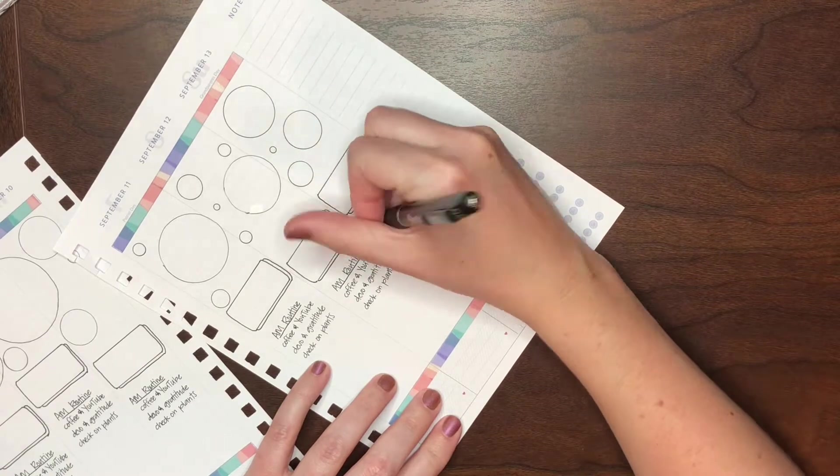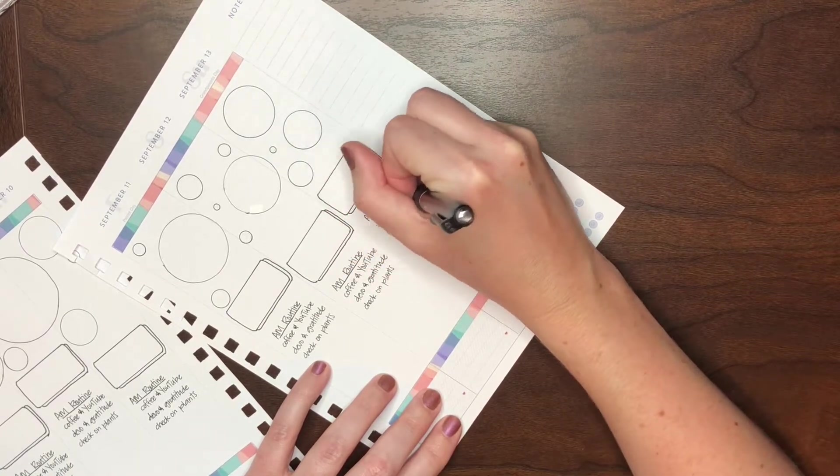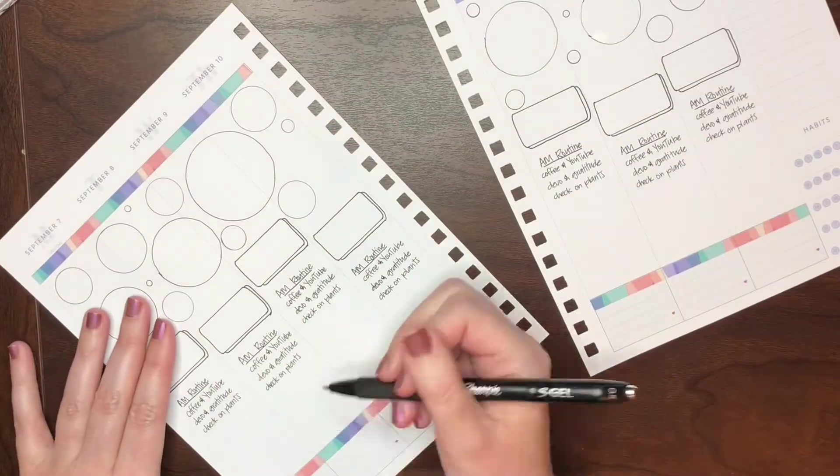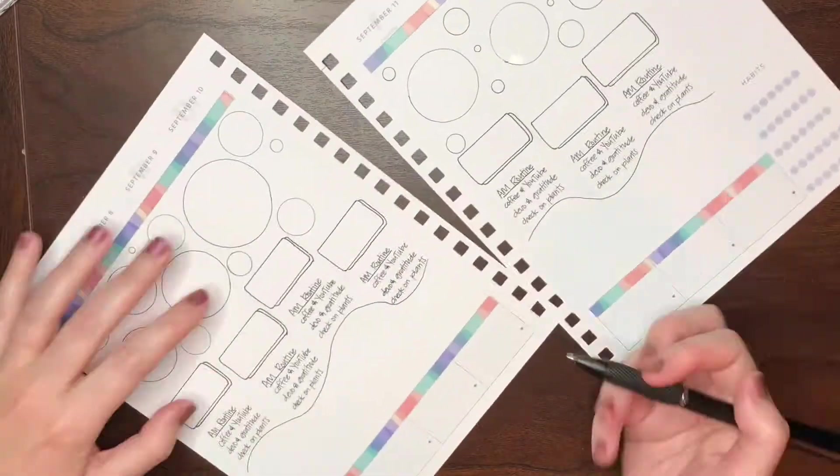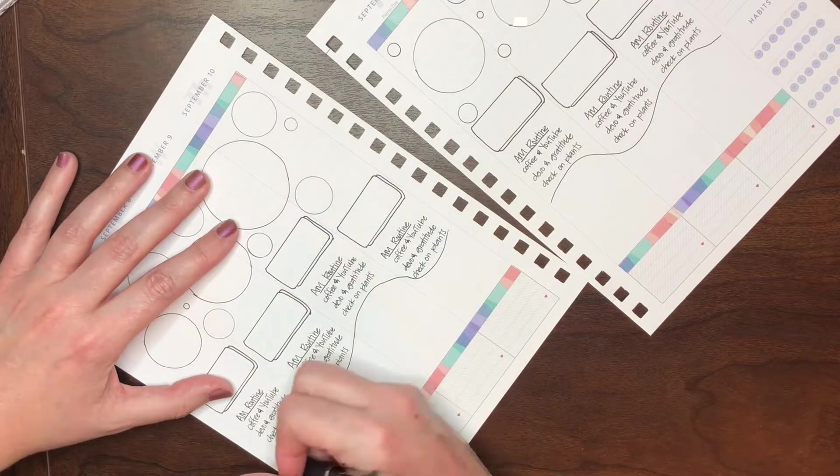Right now I'm just filling in my little AM routines. I kind of grouped a couple of things together, things that I know that I do every morning. So I'll just kind of mark those off as I do them. And then here's my little bath water to separate my AM routine from my PM routine.